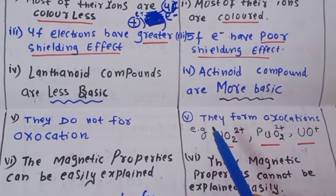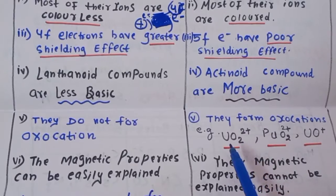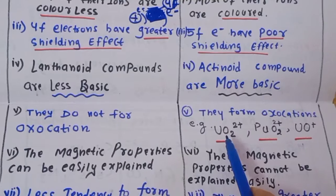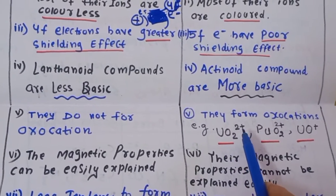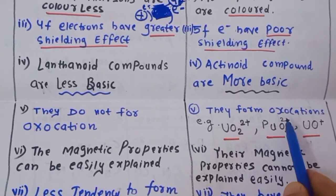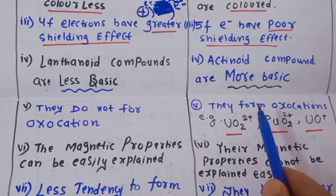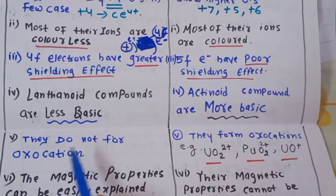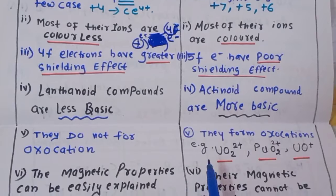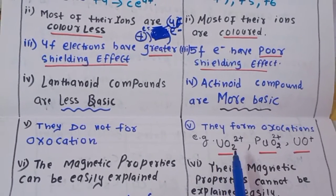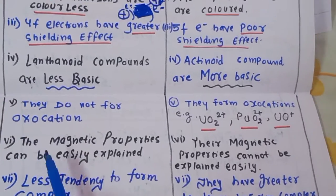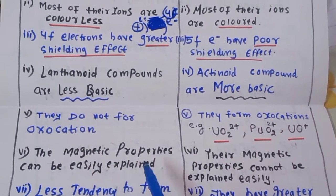Fourth difference: lanthanides do not form oxo cations, whereas actinides do form oxo cations. An oxo cation is a cation containing oxygen bonded to a metal, for example UO₂²⁺ (uranyl ion) — uranium bonded to oxygen with a 2+ charge. Plutonium also forms similar oxo cations.